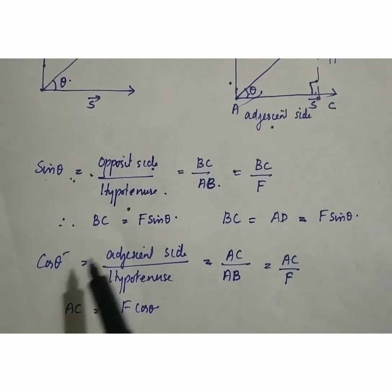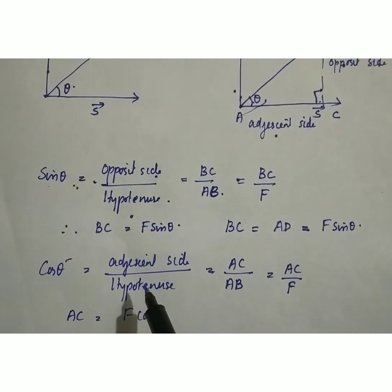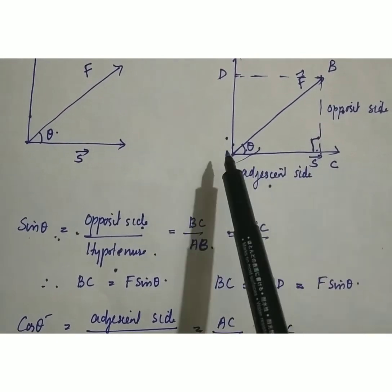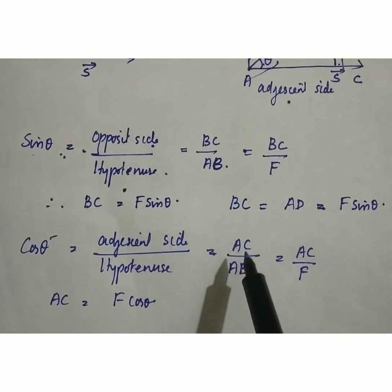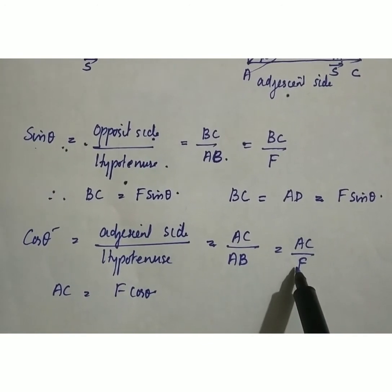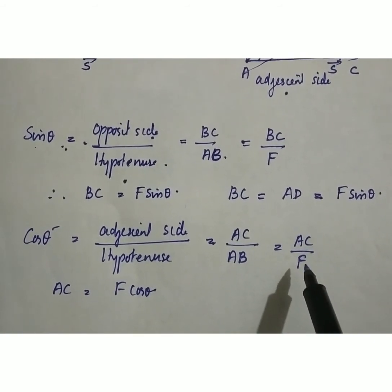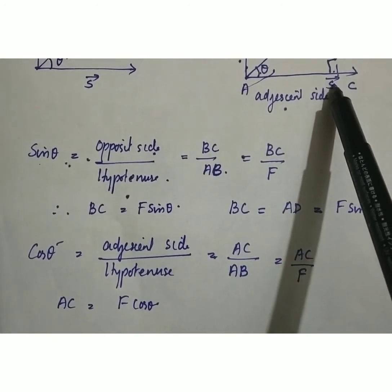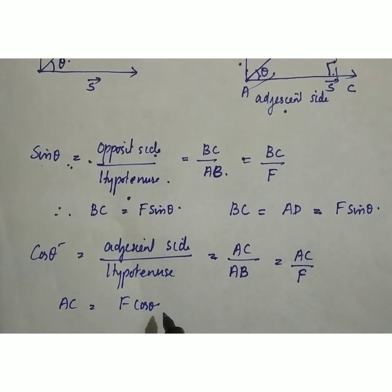Now, cos theta is equal to adjacent side by hypotenuse. The adjacent side is AZ and the hypotenuse is AB, so cos theta equals AZ by AB, which equals AZ by F. Therefore, AZ is equal to F cos theta. So F cos theta is acting in the horizontal direction, and F sin theta is acting in the vertical direction.